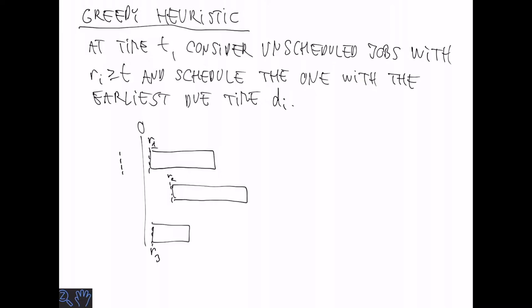So what we do is that we look at the release times. And suppose that r1 and r3 are both due. Then we take r3 first because it has the earliest due date.